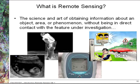So what is remote sensing? The textbook definition from Lillison, Kiefer and Chipman is the science and art of obtaining information about an object, area or phenomenon without being in direct contact with a feature under investigation. But for all intents and purposes, the easier way to understand what remote sensing is is to actually break it down.